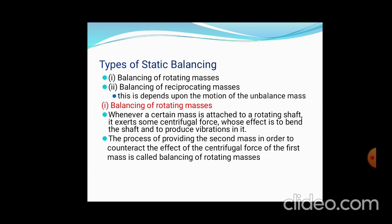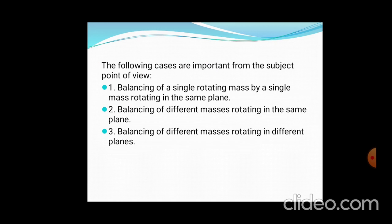First is the balancing of rotating masses — it provides rotation to the motions, meaning the forces or couples acting on it (centrifugal forces and centrifugal couples) will be balanced. There are three categories: first, balancing of a single rotating mass with a single mass rotating in the same plane; second, balancing of different masses in the same plane; and third, balancing of different masses rotating in different planes.